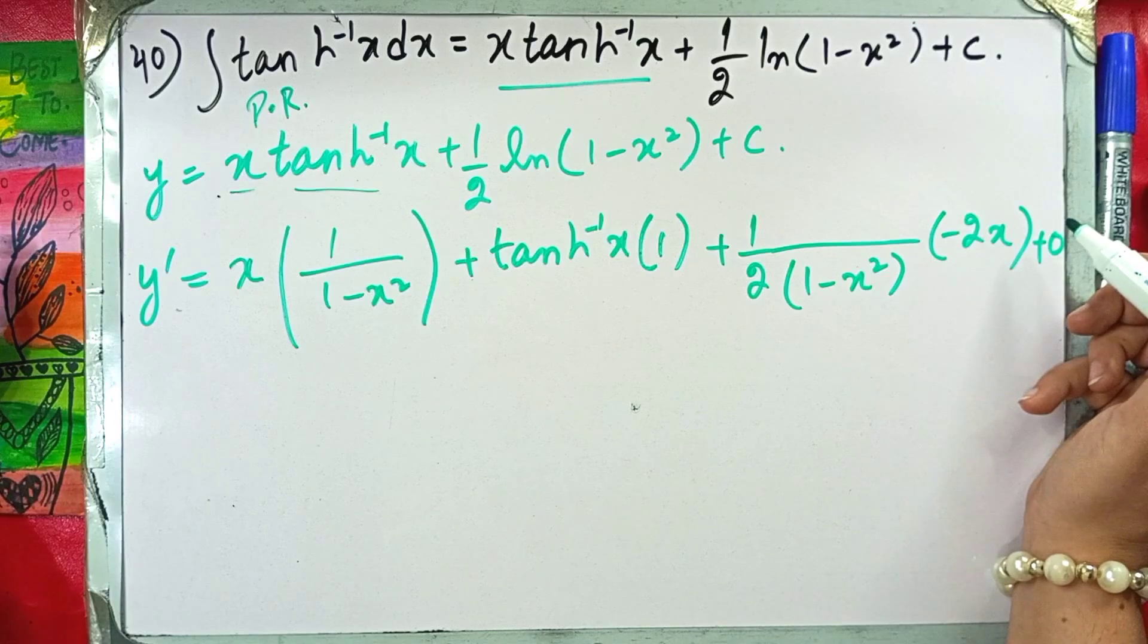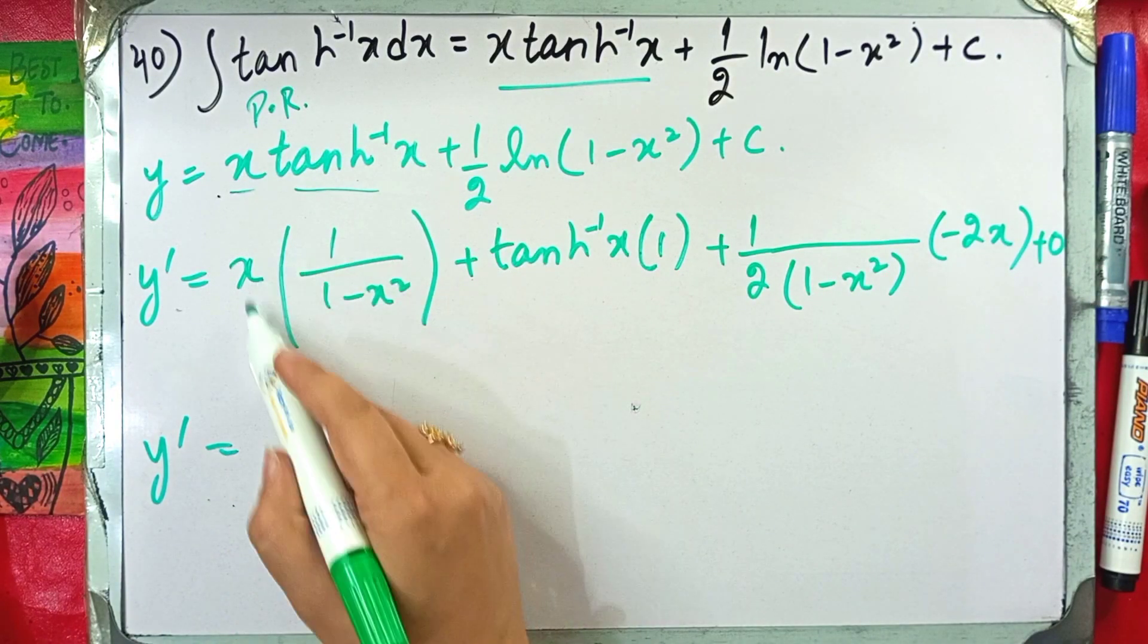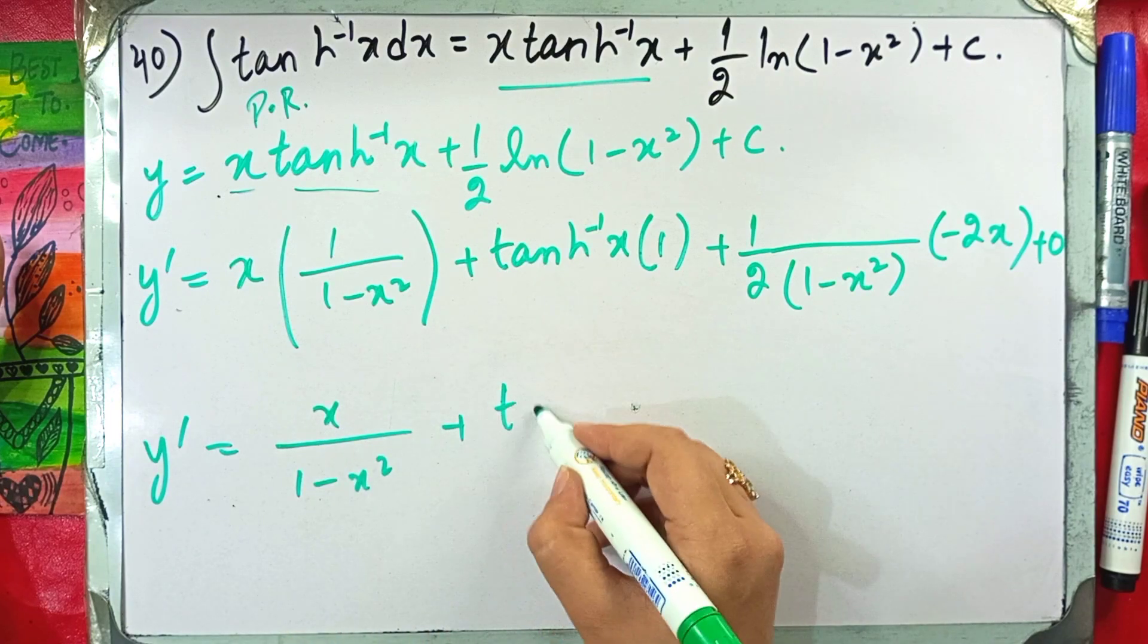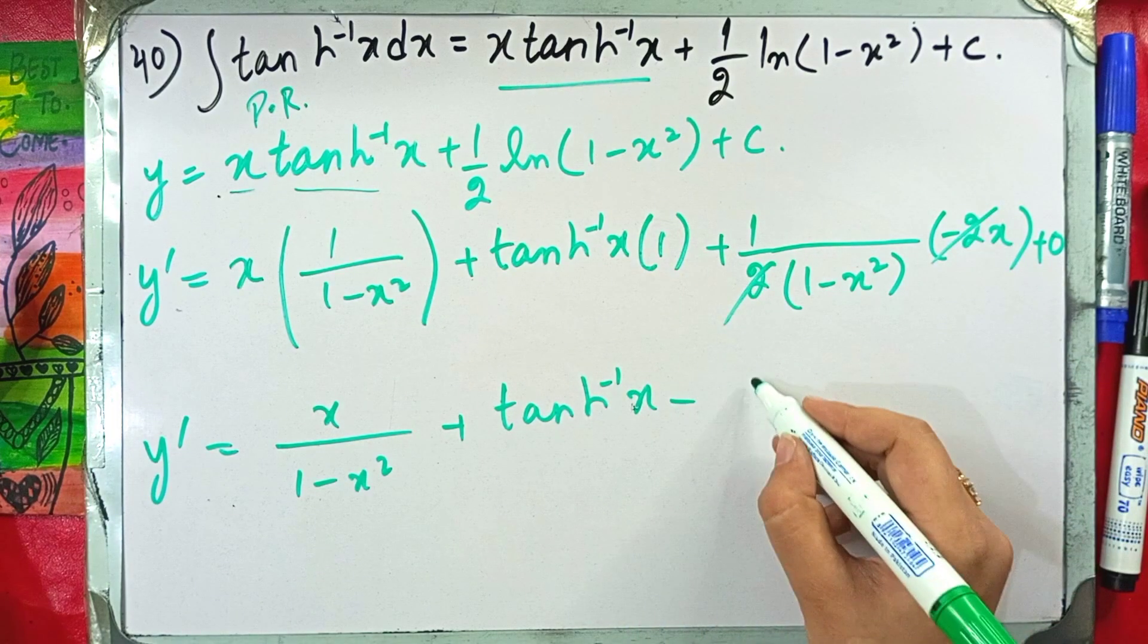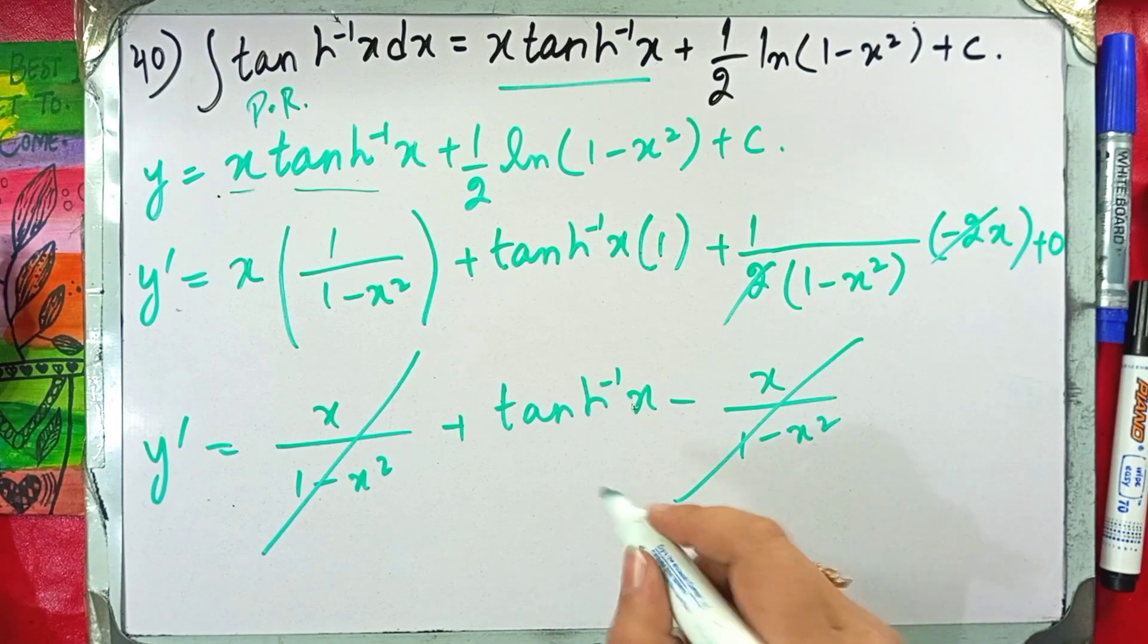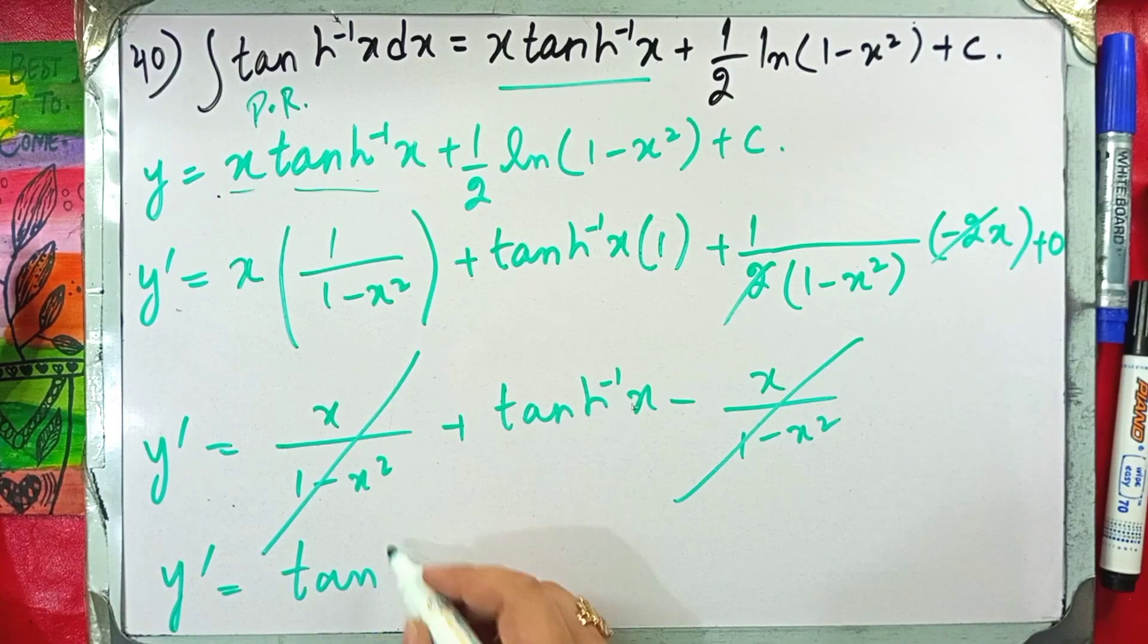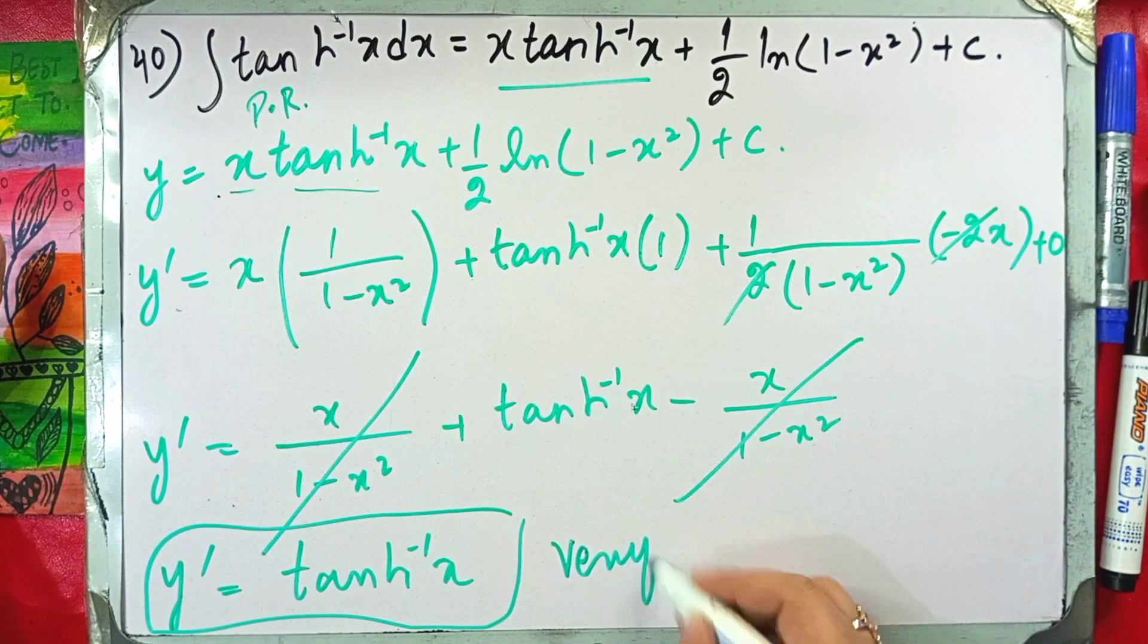Let's look at how we solve this function. So what will happen? This will be y prime equal to, if we see this, this will be x by 1 minus x square plus this will be tan hyperbolic inverse of x. This will be 2 to cancel. Minus x by 1 minus x square. This and this should be cancelled because both are the same with opposite sign. So what will happen? It will be tan hyperbolic inverse of x. And this will be our integration function which will be verified.